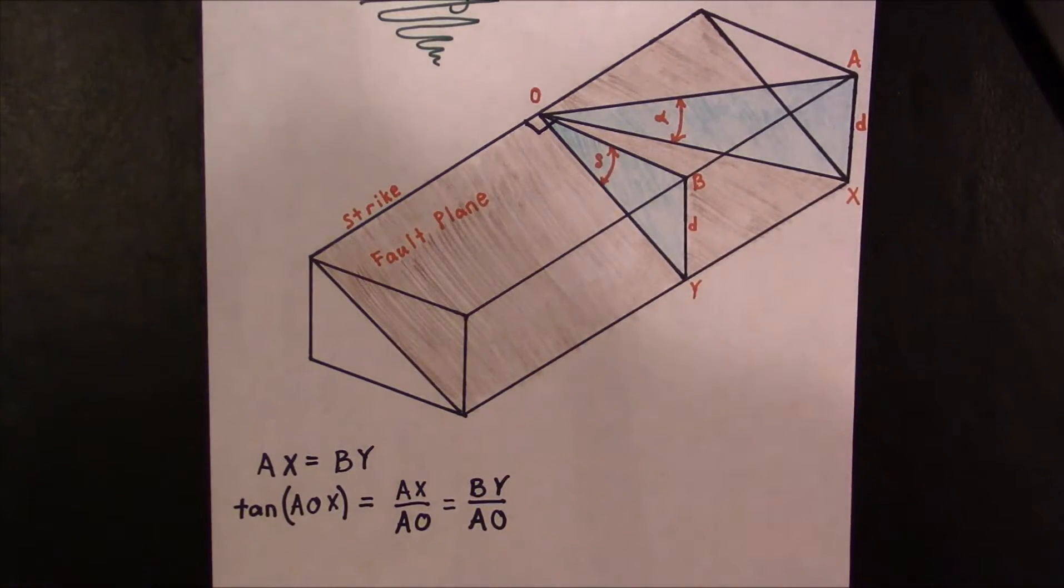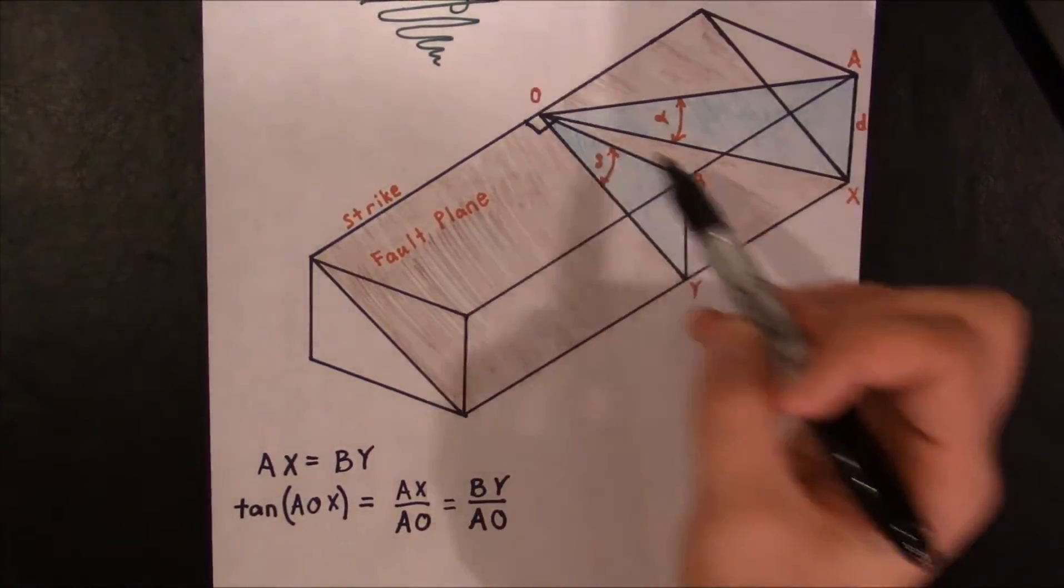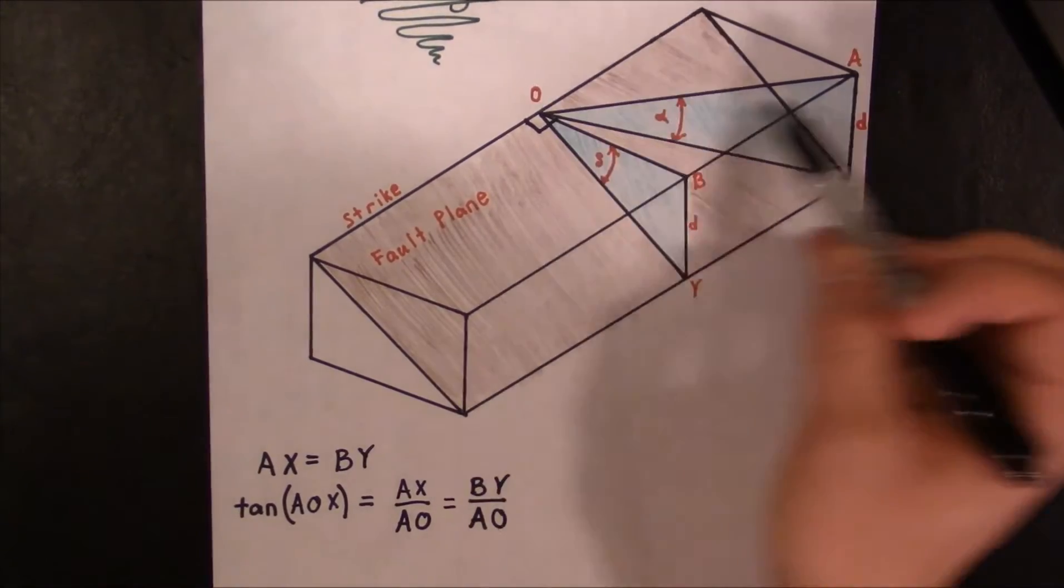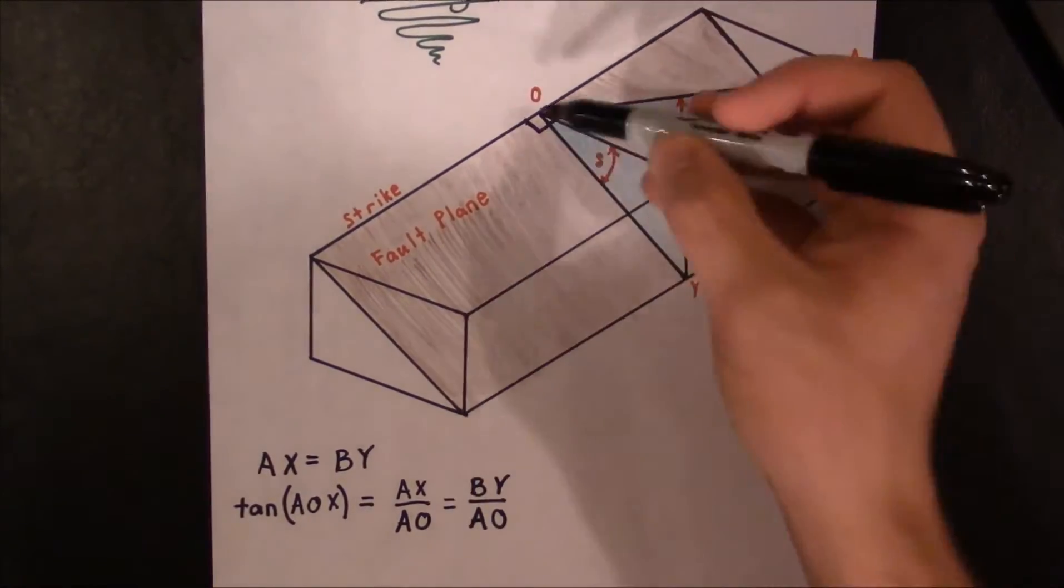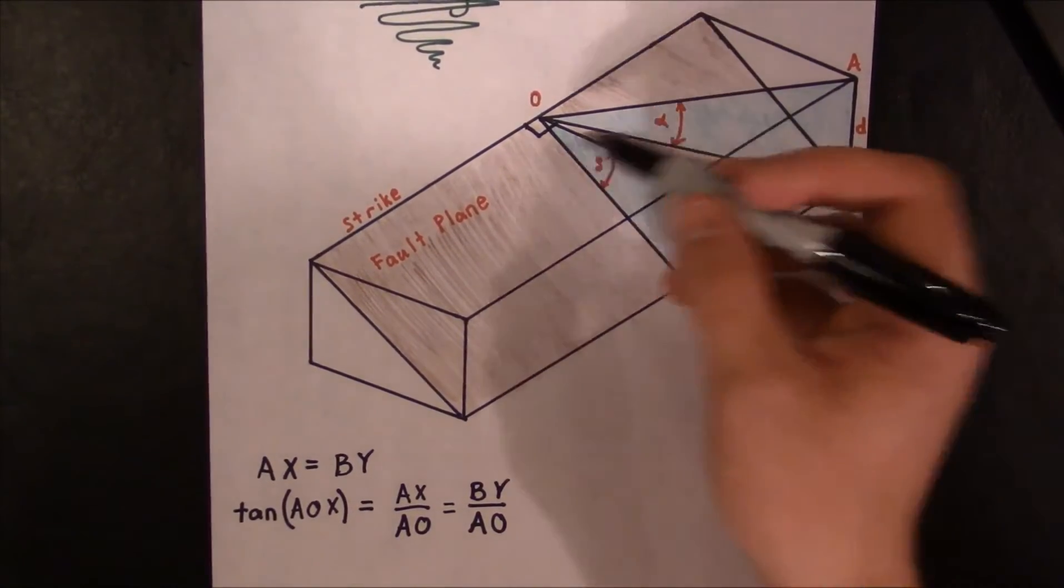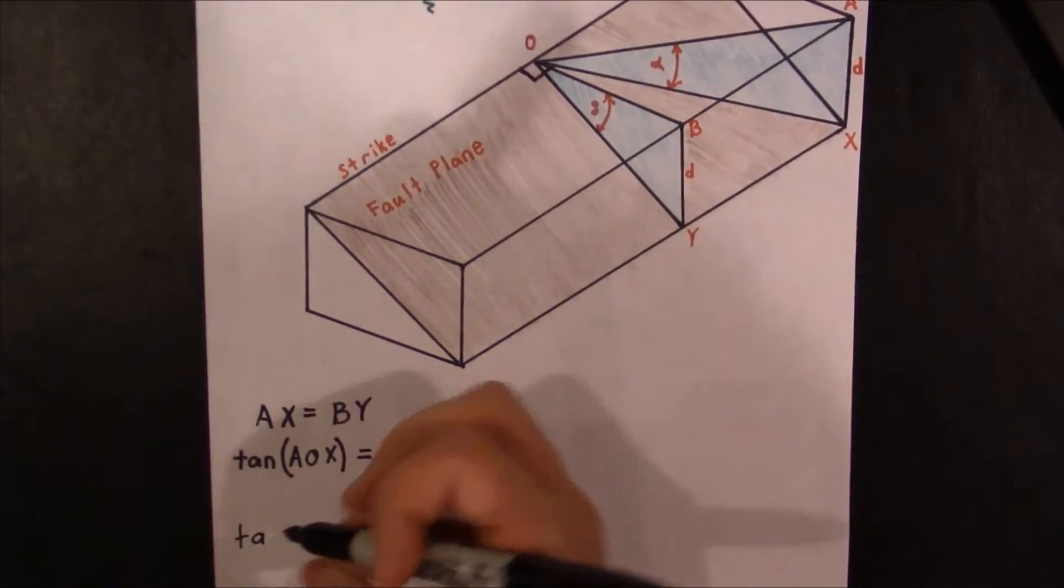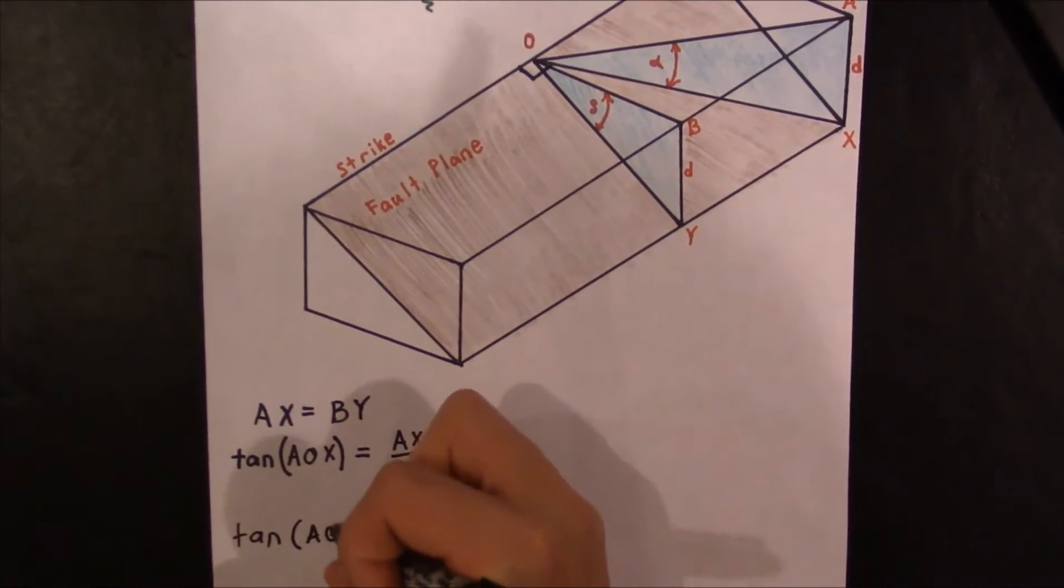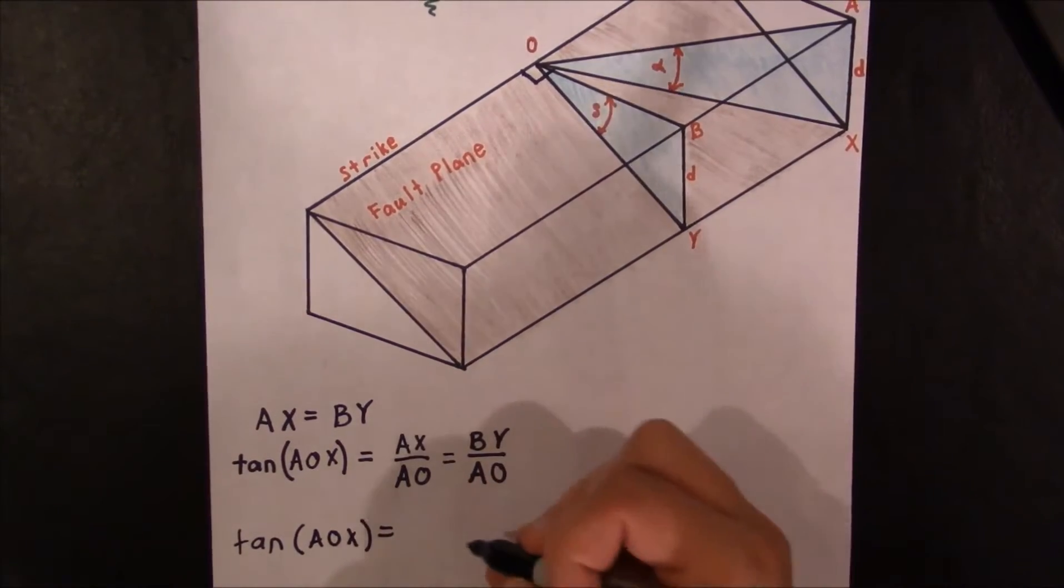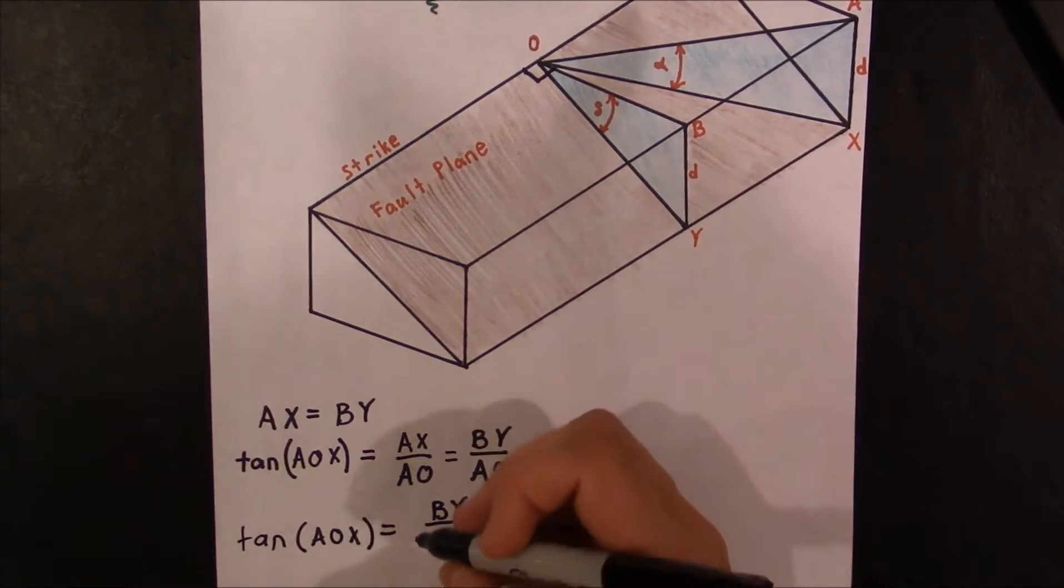Next we're going to try and represent AO differently. So if you take a look at this top face, we're going to look at the triangle AOB. You see that AOB. And we can represent AO as OB times the secant of AOB. And the reason this is, is because this is just simply the hypotenuse of a right triangle. So let me write that. We've got the tangent of AOX is equal to... AOB.